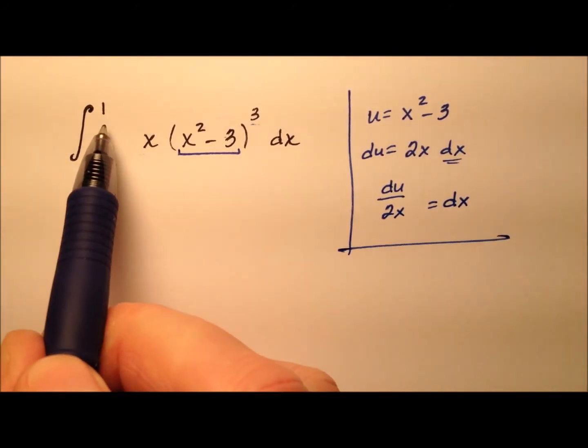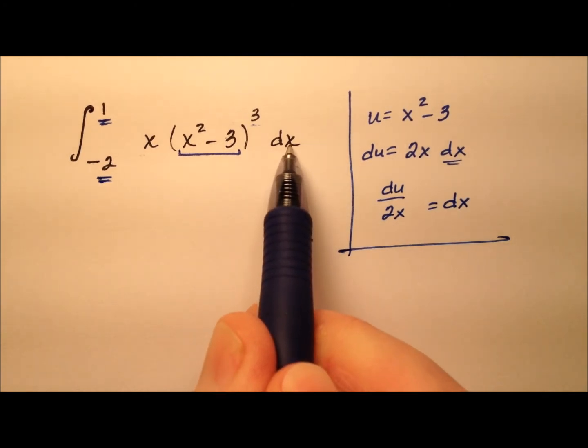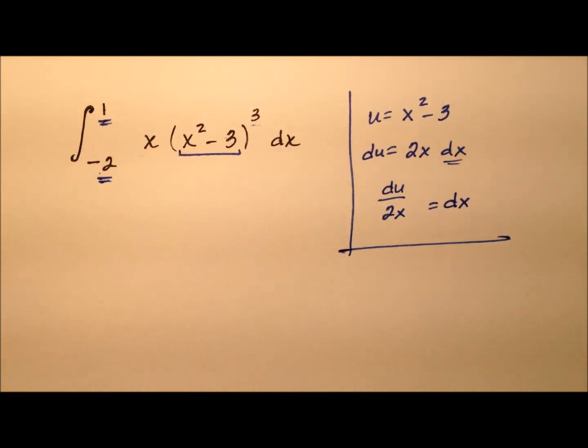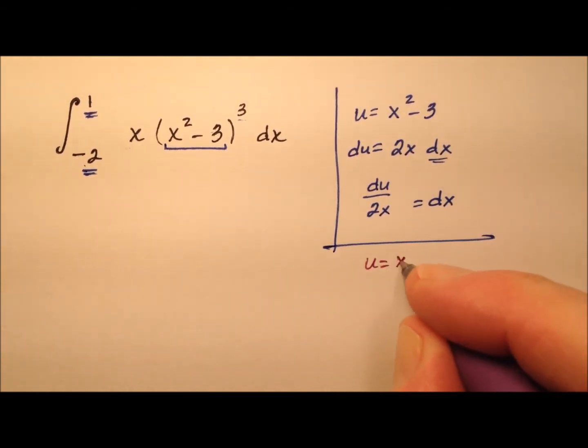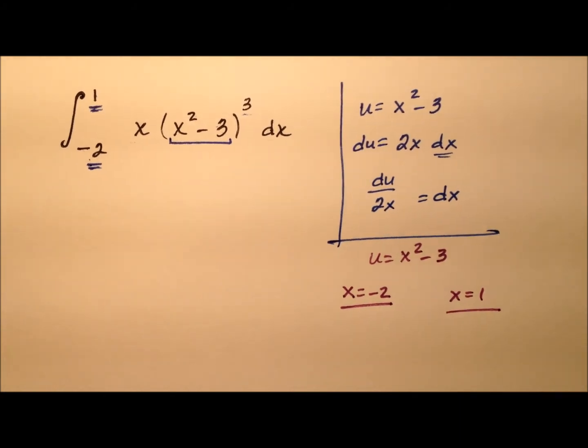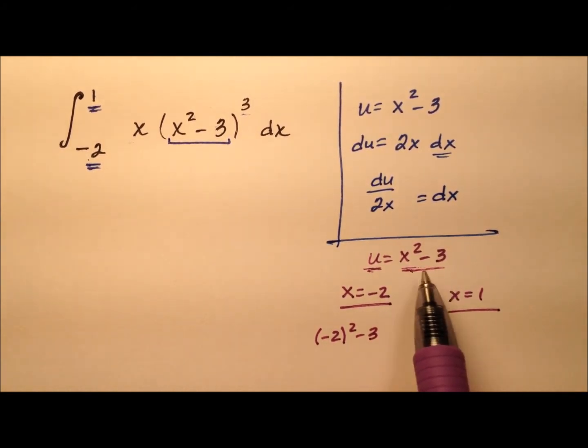But recall that when we have a definite integral, these limits of integration here need to be changed as my x's are changed to u's. Because these limits of integration right now are in x, so let's make them in u. We know that our u was x squared minus 3, so we need to change these values. If x is negative 2, we're going to take negative 2 squared minus 3 and plug it into this expression. So 4 minus 3 is 1.